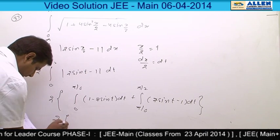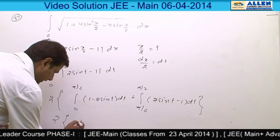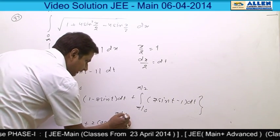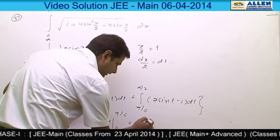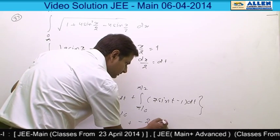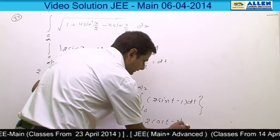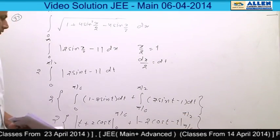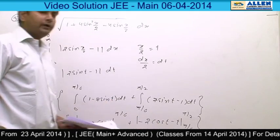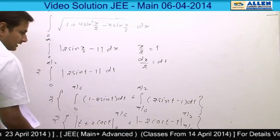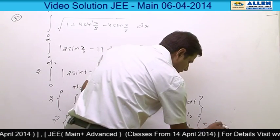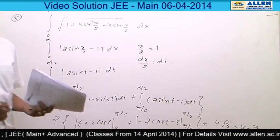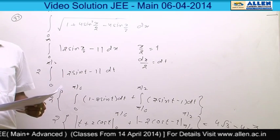This becomes 2 times: t plus 2 cos t from 0 to pi by 6, plus minus 2 cos t minus t from pi by 6 to pi by 2. By putting the values pi by 6 and 0, as well as pi by 2 and pi by 6, we get the final answer as 4 root 3 minus 4 minus pi by 3. This implies our option number 4 is correct.